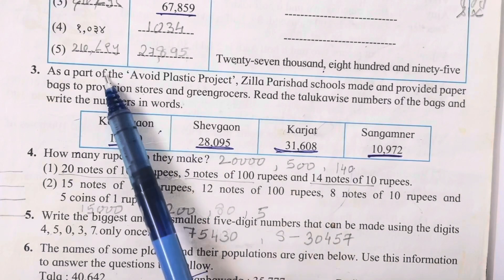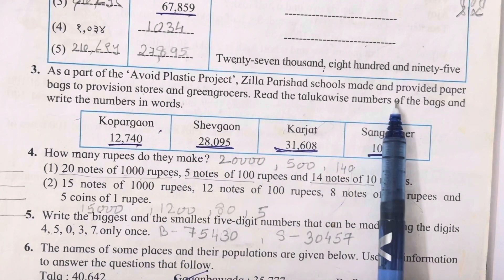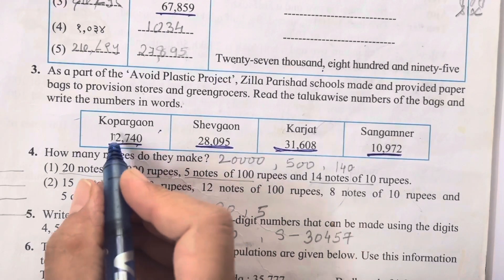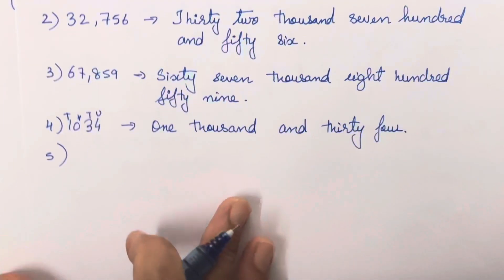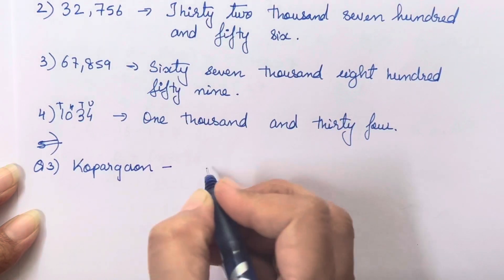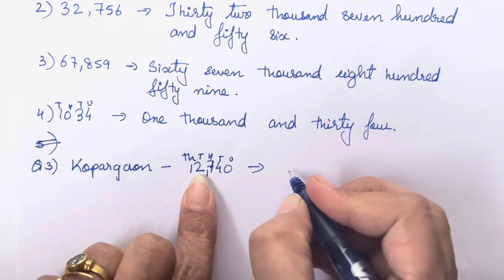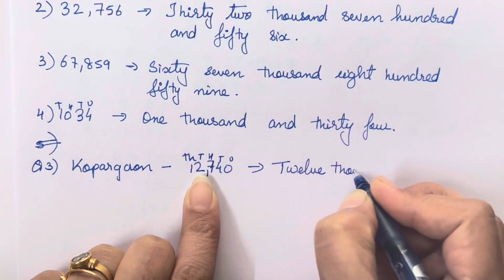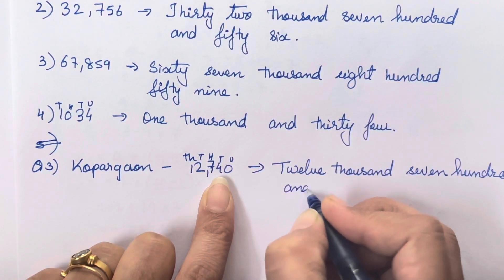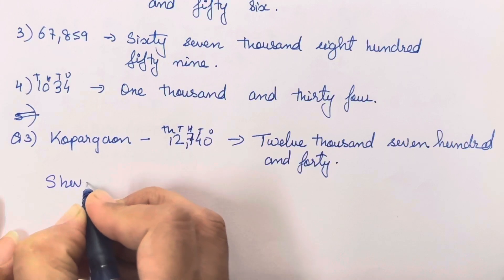Now let's move on to the third question. As part of an 'Avoid Plastic' project, Zilla Parishad school made and provided paper bags to provision stores and groceries. Read the taluka-wise numbers of bags and write the numbers in words. For Copper Gao, the number is 12740 - unit, tens, hundred, thousand, ten thousand - so that is twelve thousand seven hundred and forty.